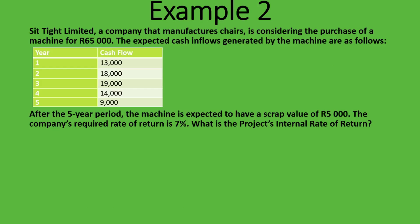Here's the second example. Sit Tight Limited, a company that manufactures chairs, is considering the purchase of a machine for 65,000 rand. The expected cash inflows are given for years one to five. After the five-year period, the machine is expected to have a scrap value of 5,000 rand. The company's required rate of return is 7%. What is the project's internal rate of return?